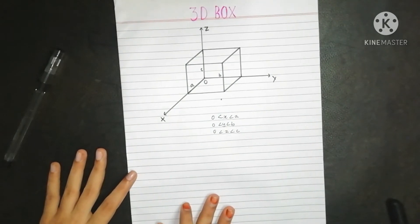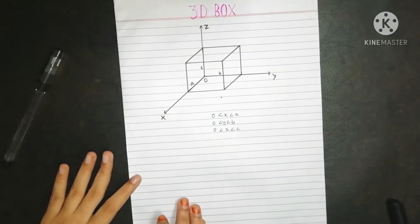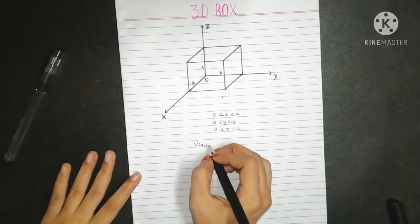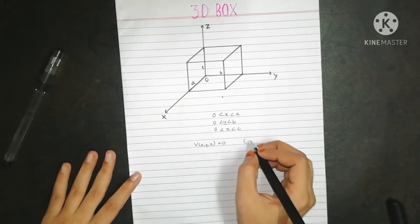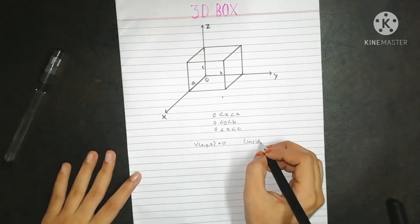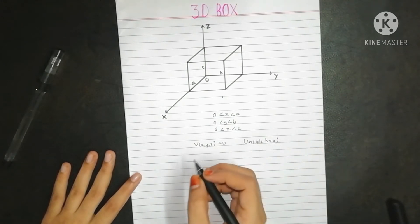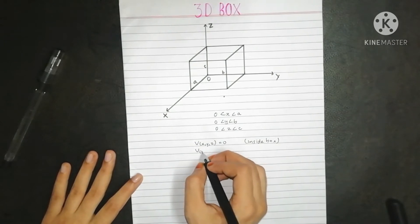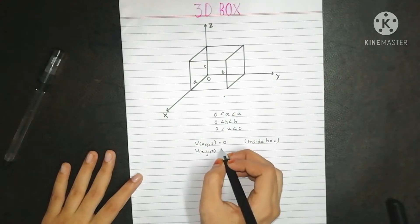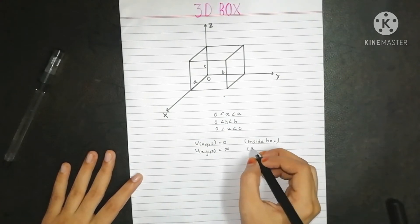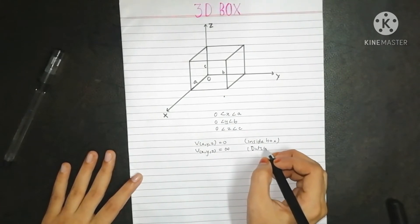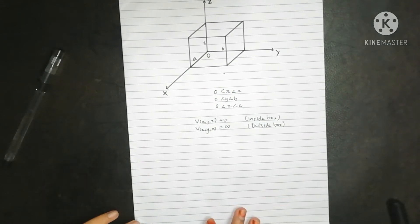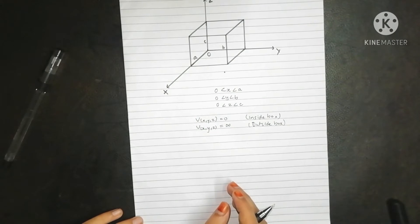The potential inside the box is zero, that is V(x, y, z) = 0 inside the box, and the potential outside the box is infinity, written as V(x, y, z) = ∞ outside the box.